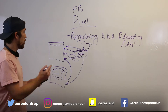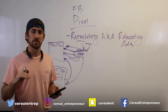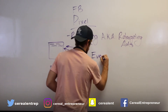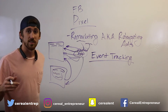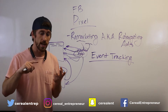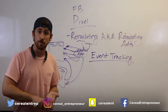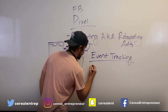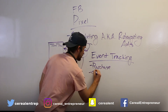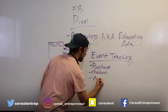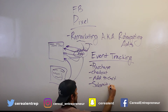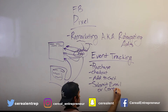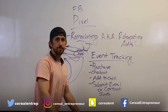Now that you understand the basics, let's talk about the next level: event tracking. Event tracking lets you track specific actions users take. For example, it tracks when someone signs up and submits their email address, when someone adds something to cart, when somebody has reached the checkout phase, and even when someone has made a purchase.